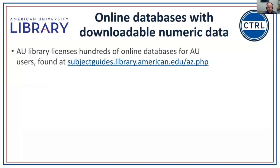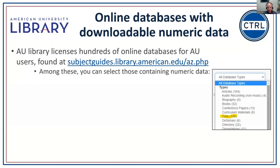The library licenses hundreds of online databases for AU users dealing with all kinds of content — journals, e-journals, e-books, videos, and more. Among those, you can select the subset that contains numeric data. There is a pulldown for database types, and just over a hundred have numeric data in some form — meaning something you could put into a spreadsheet and calculate on. These are identified with a special icon in the database list indicating downloadable data from the information provider's website.